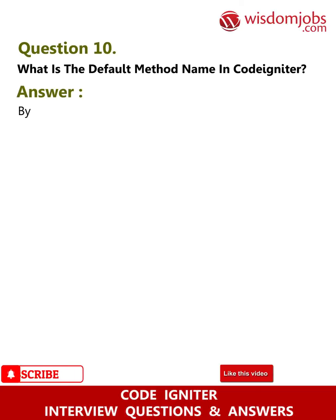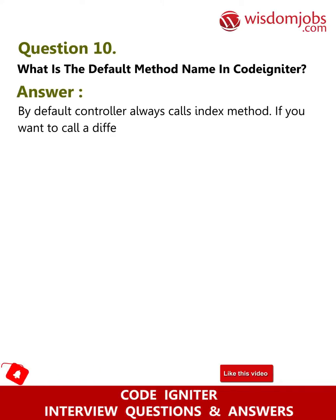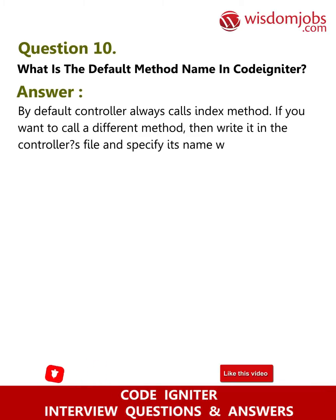Question 10: What is the default method name in CodeIgniter? Answer: By default, the controller always calls the index method. If you want to call a different method, then write it in the controller file and specify its name while calling the function.